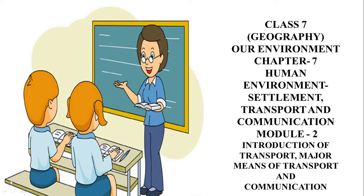Hello, students. Welcome to our next video of Class 7 Geography, Chapter 7: Human Environment — Settlement, Transport and Communication. In the previous video we discussed about settlement and its types. Today, we will discuss about the introduction of transport, major means of transport and communication.